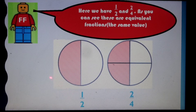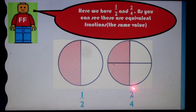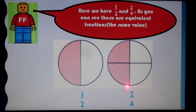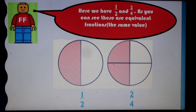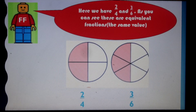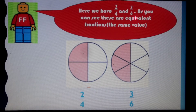So we've got the half here and we've got two quarters, because there's one, two, three, four sections there. So one half and two quarters — are they the same, Freddie? Oh yeah, they're totally the same. As you can see, the two circles have to be the same shape and size as well. Here we have two quarters and three sixths. As you can see, these are equivalent fractions — the same value.